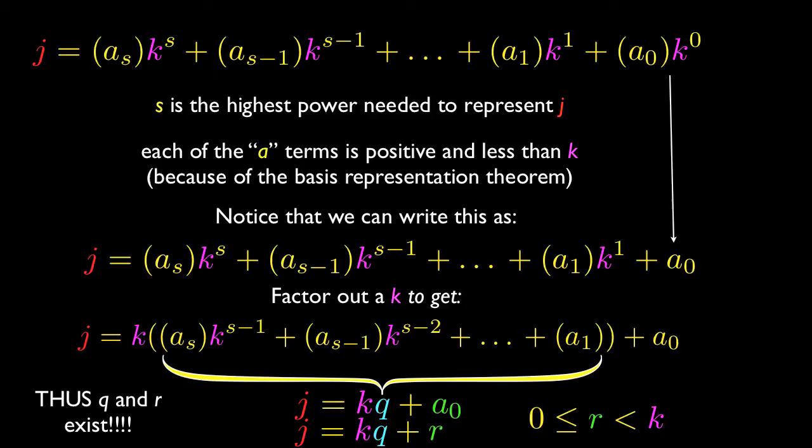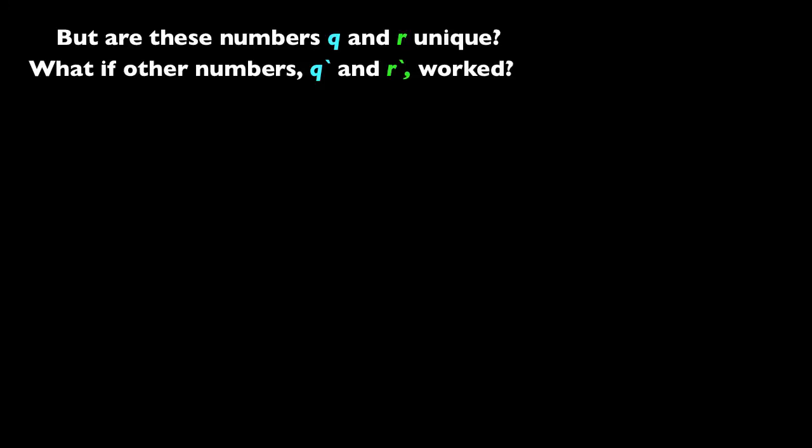So we prove that the numbers exist. Now what we need to do is prove that such a q and r are unique. And so are these unique? What if there are other numbers that worked? And the algebra here can get quite involved, so I just want to talk about it in words and concepts